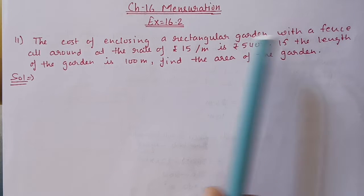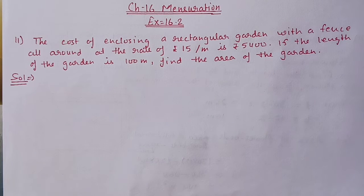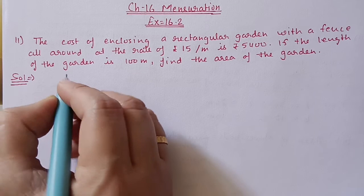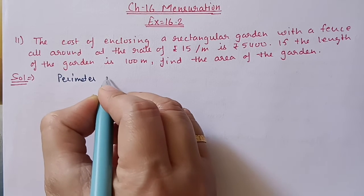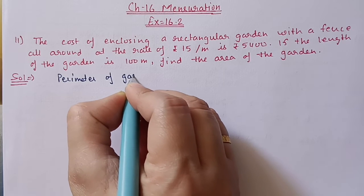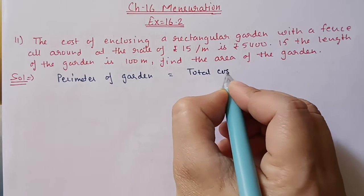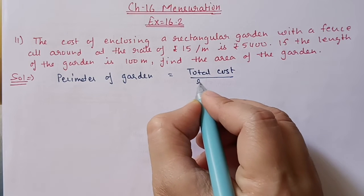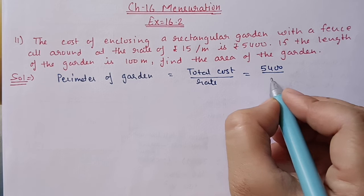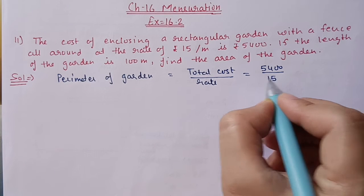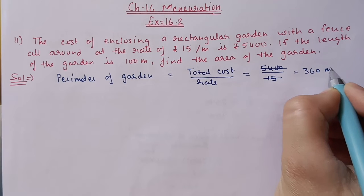Here the rate and total cost are given, so with the help of rate and total cost we can find out the perimeter. Therefore, perimeter of garden is equal to total cost divided by rate. Total cost is 5400 rupees and rate is 15 rupees per meter. After cancellation we get 360 meters.